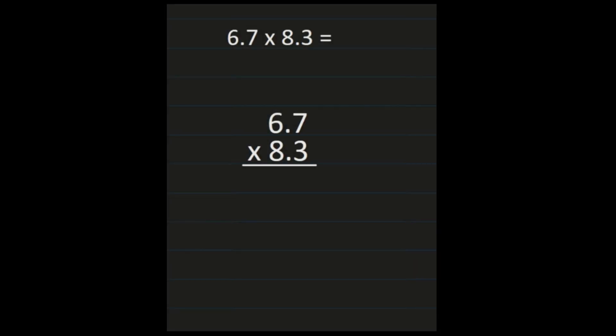Our next example: 6 and 7 tenths times 8 and 3 tenths. We've talked about how we don't need to line up our decimal point when multiplying, but in this example it looks like we did. That's only because we have the same number of digits in front of and behind the decimal in both factors — so it just happens to line up when we set this problem up. We're going to multiply as if the decimal points weren't even there, starting on the right by multiplying everything by 3.